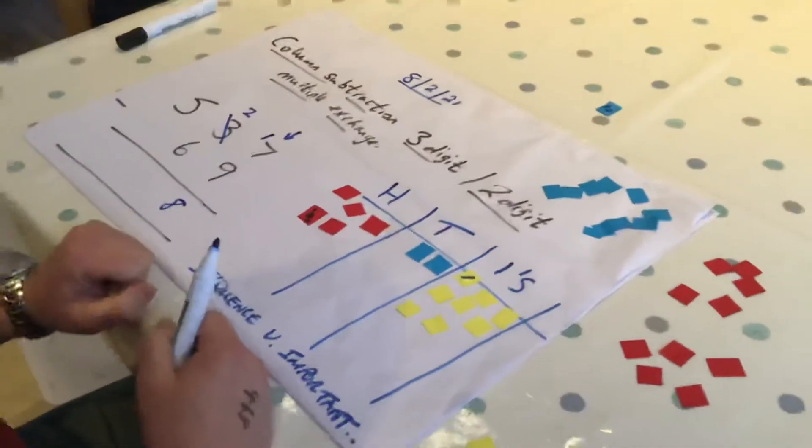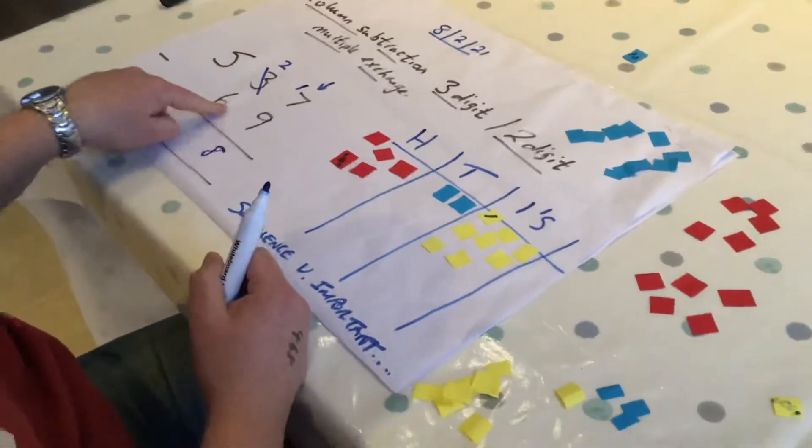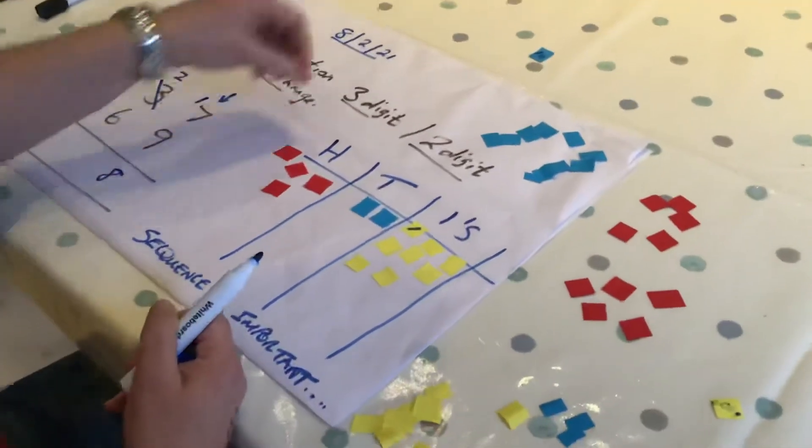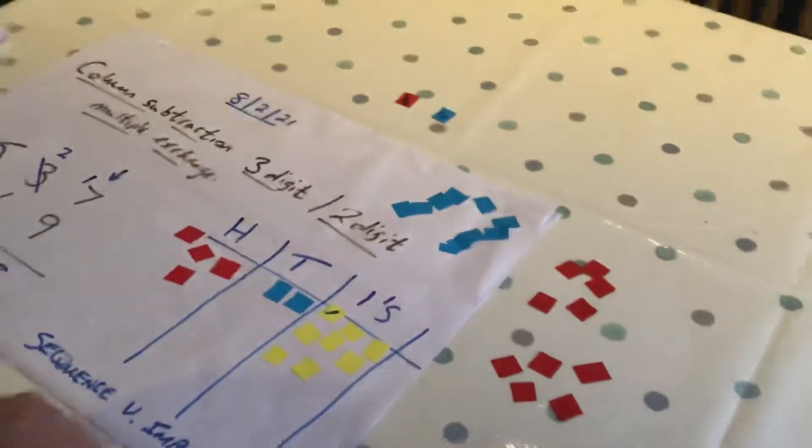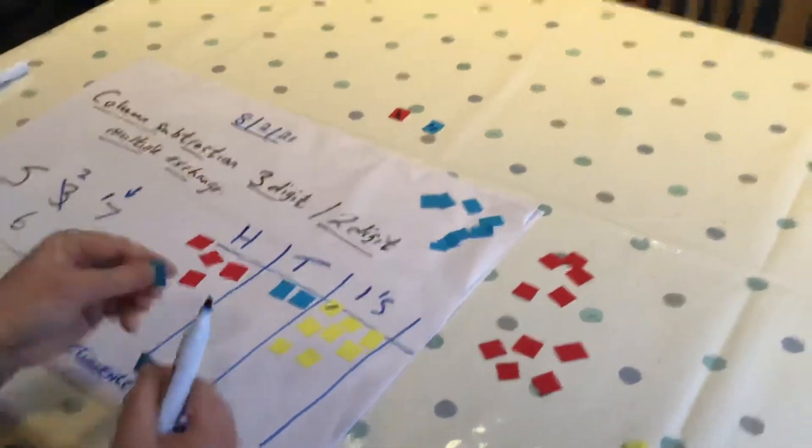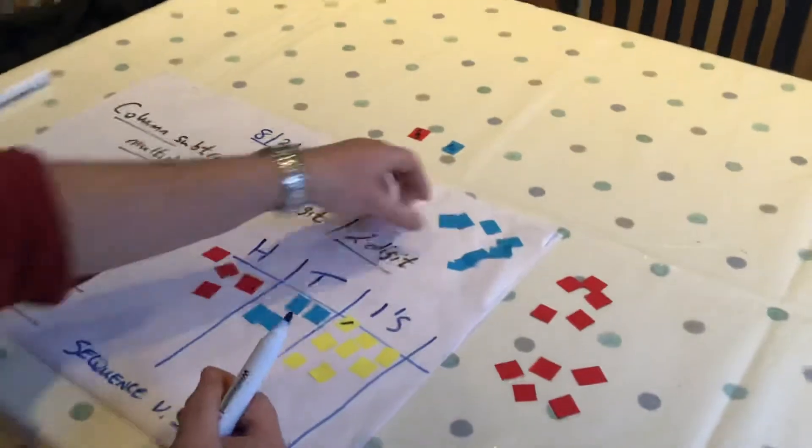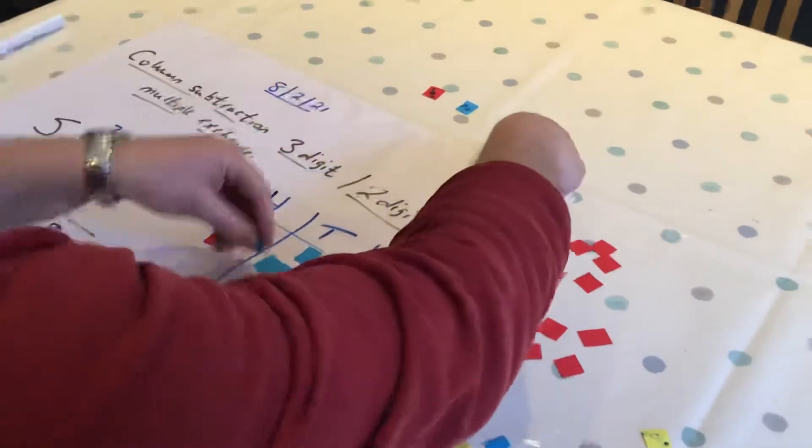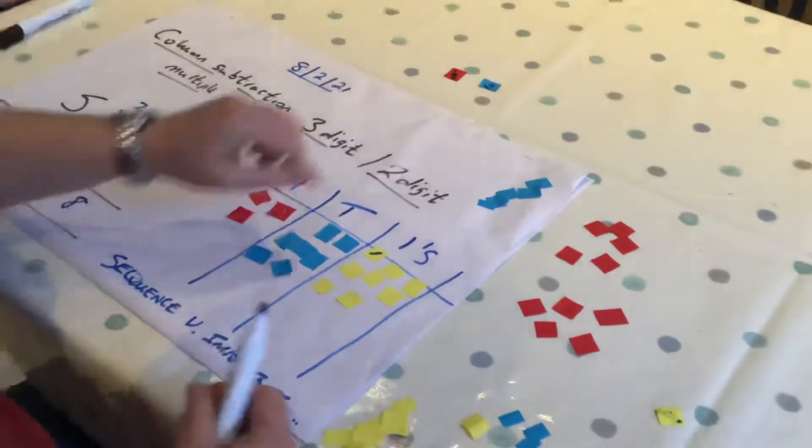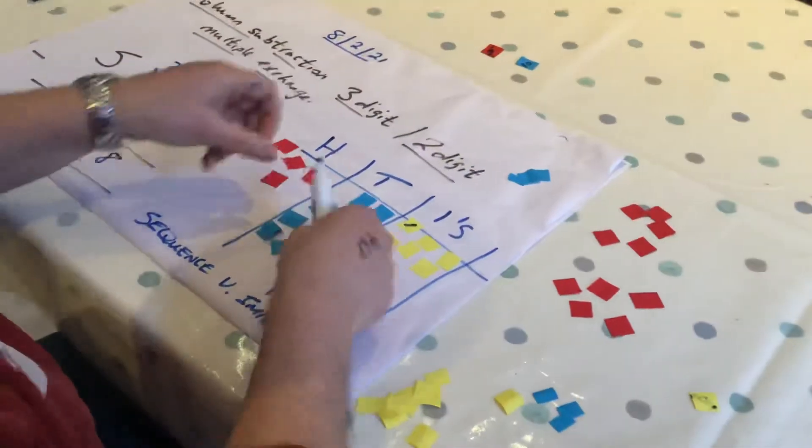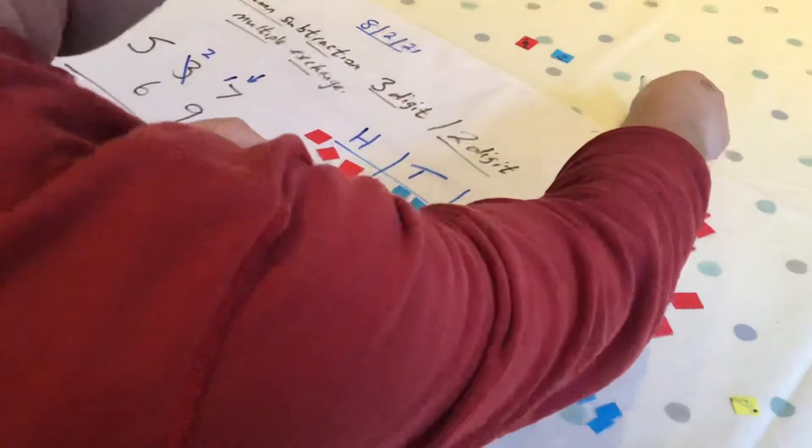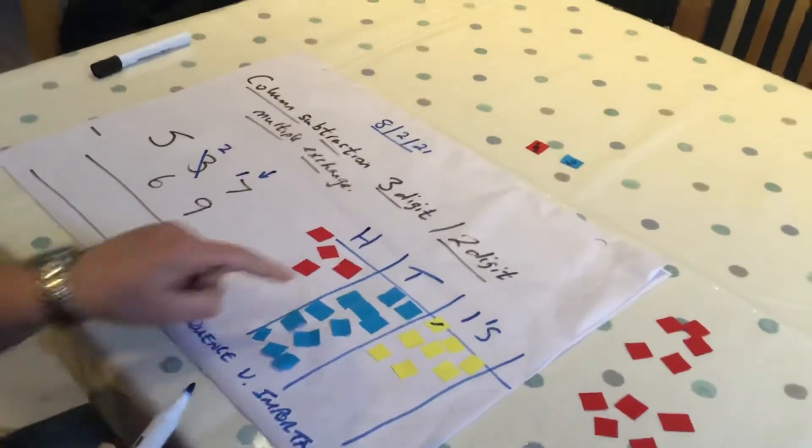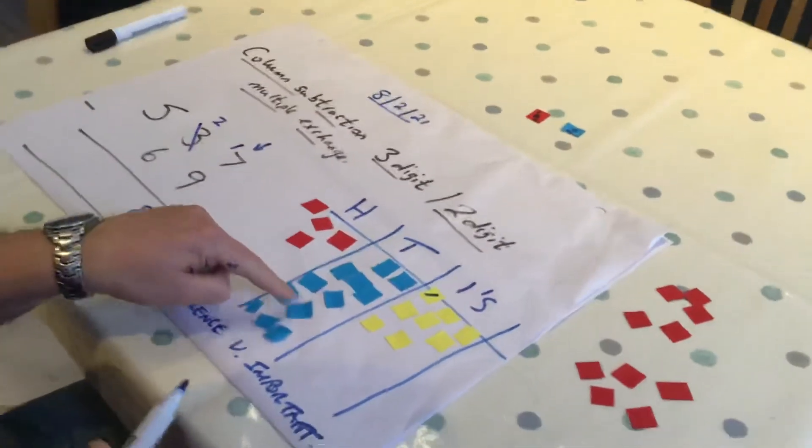Now I'll move on to my tens column. I've only got two tens. I need to take away six tens. I can't do it, so I'm going to have to exchange in my hundreds column. Let me remove 100, and we should all know that 100 is made up of ten tens. So that's ten, twenty, thirty, forty, fifty, sixty, seventy, eighty, ninety, one hundred. So one hundred equals ten tens.